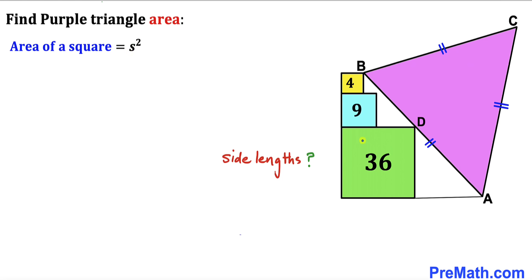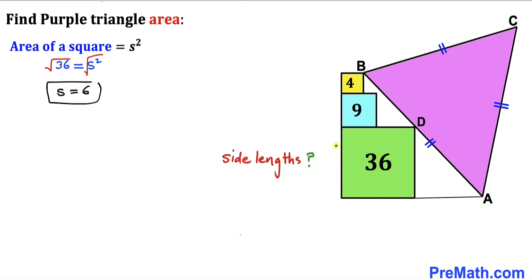Let's focus on the green square whose area is 36. So 36 equals s squared. Taking the square root, our s value turns out to be positive 6. So all side lengths of this green square are going to be 6 units.